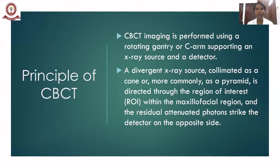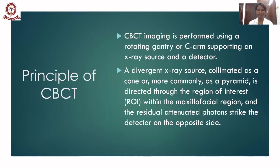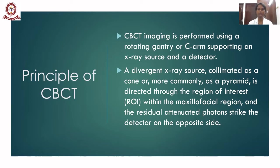The main principle of cone beam computed tomography is that it is performed using a rotating gantry or C-arm supporting the X-ray source and a detector. This rotating gantry rotates around the patient — on one side is the X-ray source and on the other side is the detector. These two rotate around the patient continuously for one single rotation. A divergent X-ray beam collimated as a cone or more commonly as a pyramid is directed through the region of interest within the maxillofacial region, and the residual attenuated photons strike the detector on the opposite side.